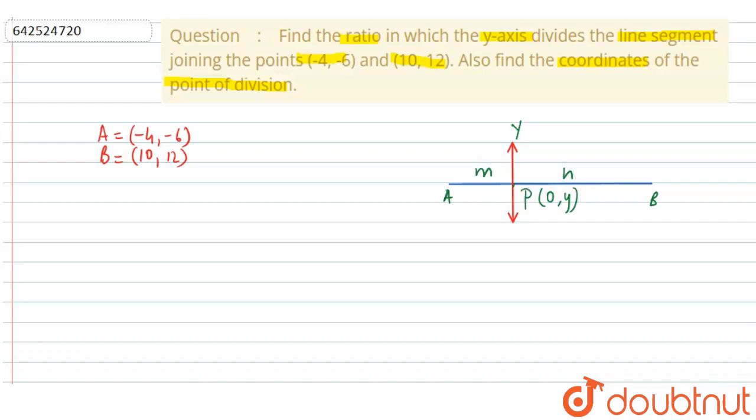That is, let the coordinates be (0, y). So now we are going to use the section formula to find out this ratio.